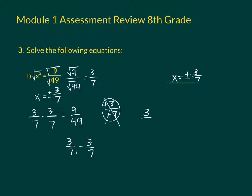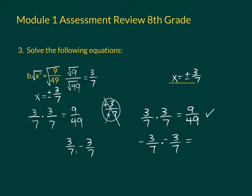To justify your solution, here's proof that 3 sevenths is an answer. When you multiply fractions, we multiply across: 3 times 3 gives us 9, and 7 times 7 gives us 49. We can also prove the negative: negative 3 sevenths times negative 3 sevenths — a negative times a negative becomes a positive, and then 3 times 3 gives us 9, and 7 times 7 gives us 49 — so it equals positive 9 forty-ninths. That's our justification that the answer is correct. And that's it for part number 3, parts A and B.